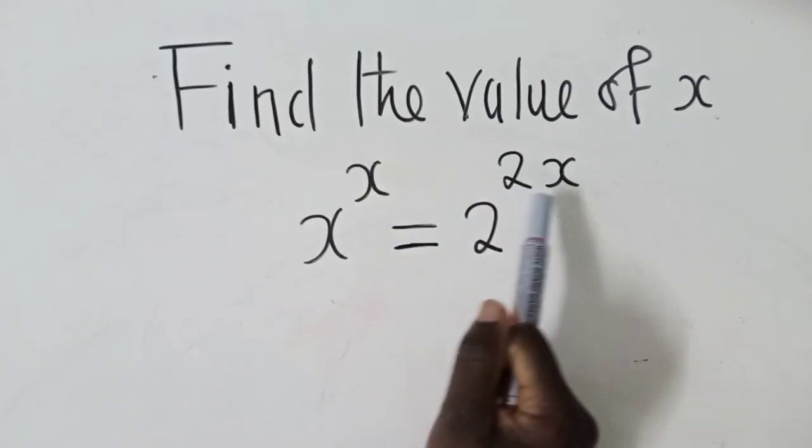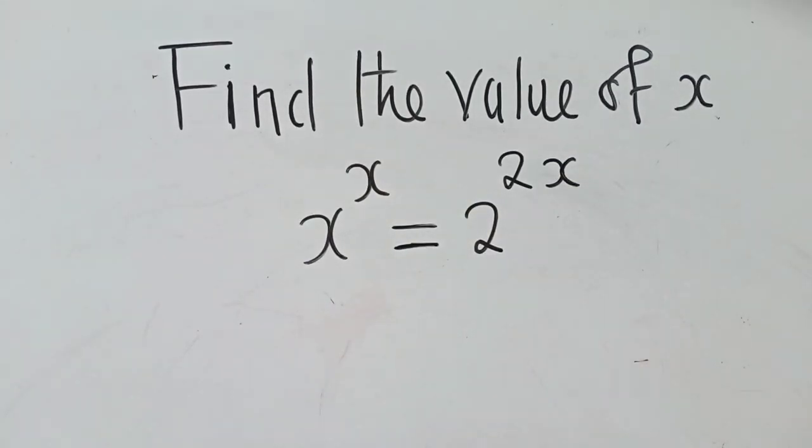You can see we've been asked to find the value of x. So I've got x here, x and x. Now how do we get to find the value of x in this case?